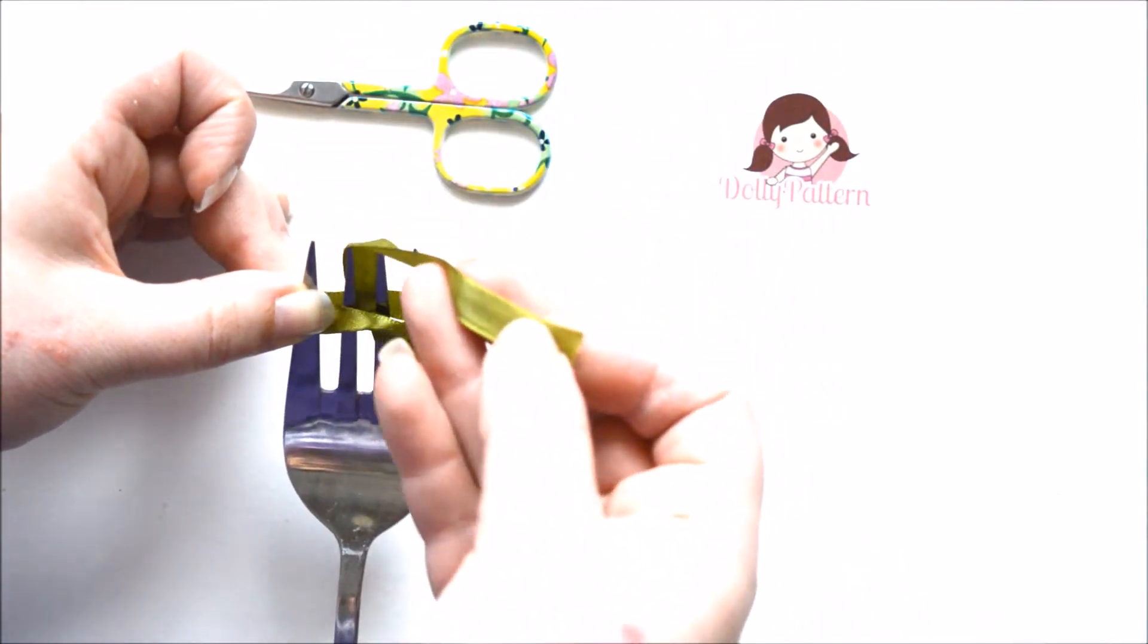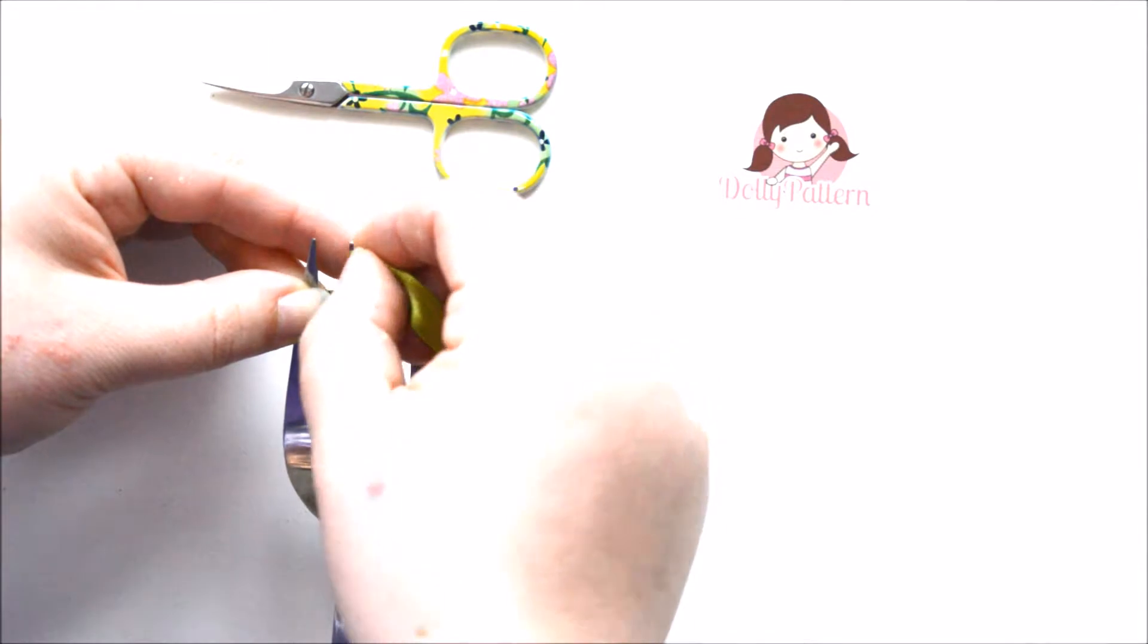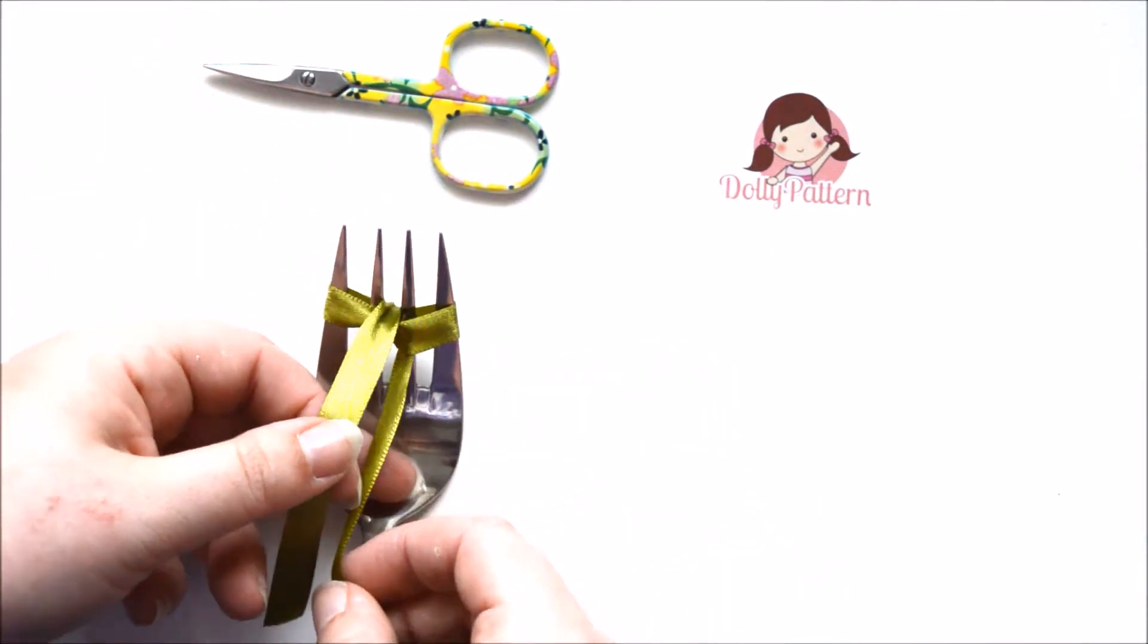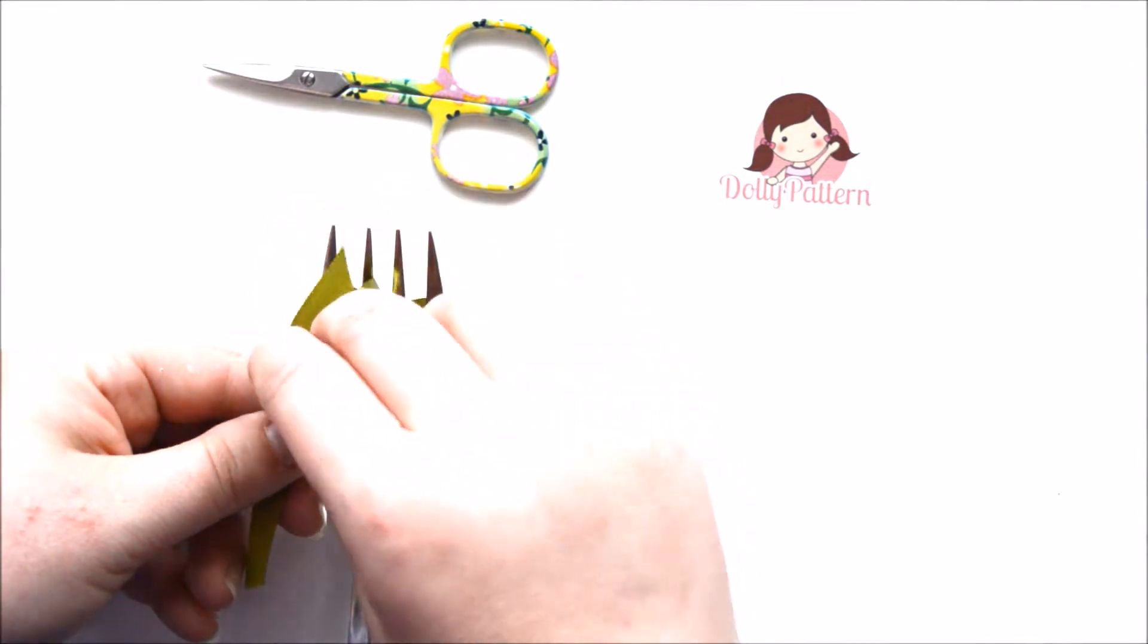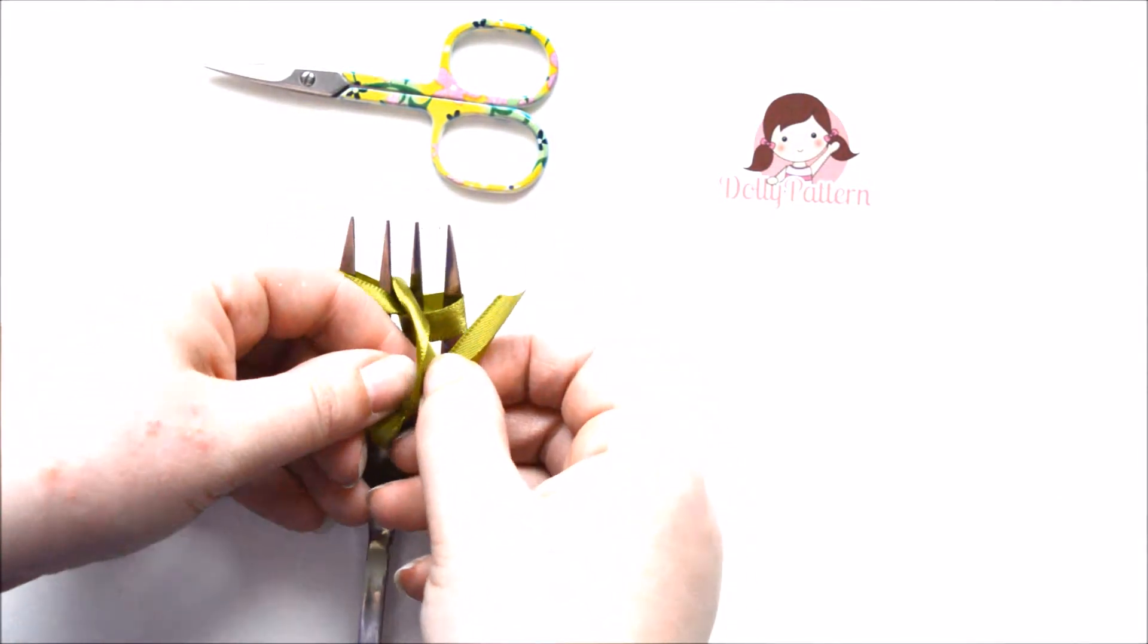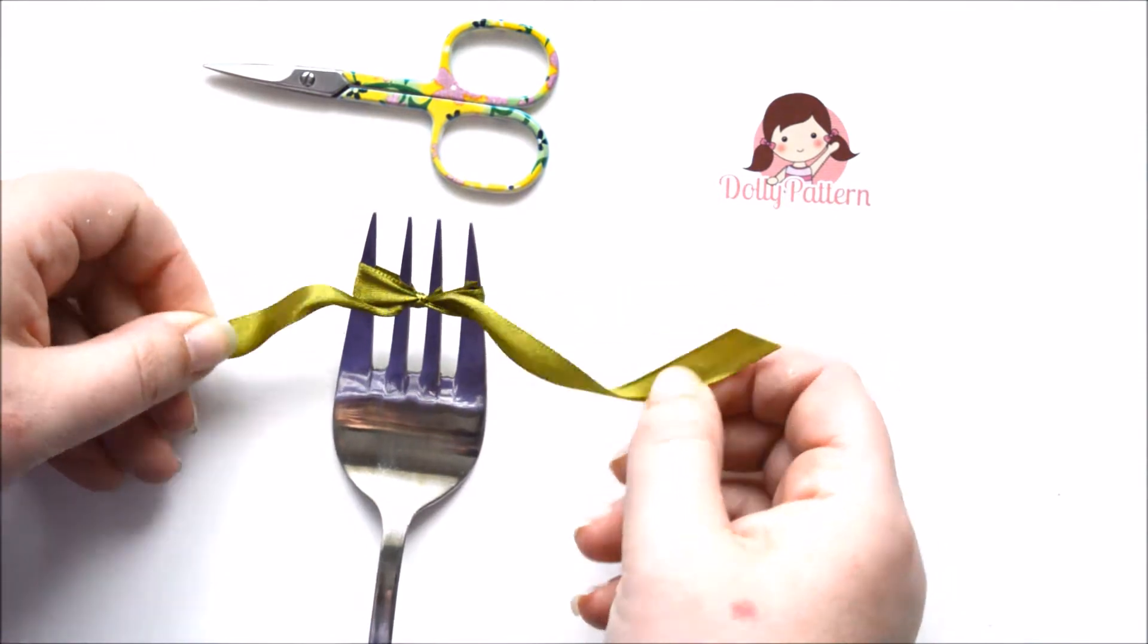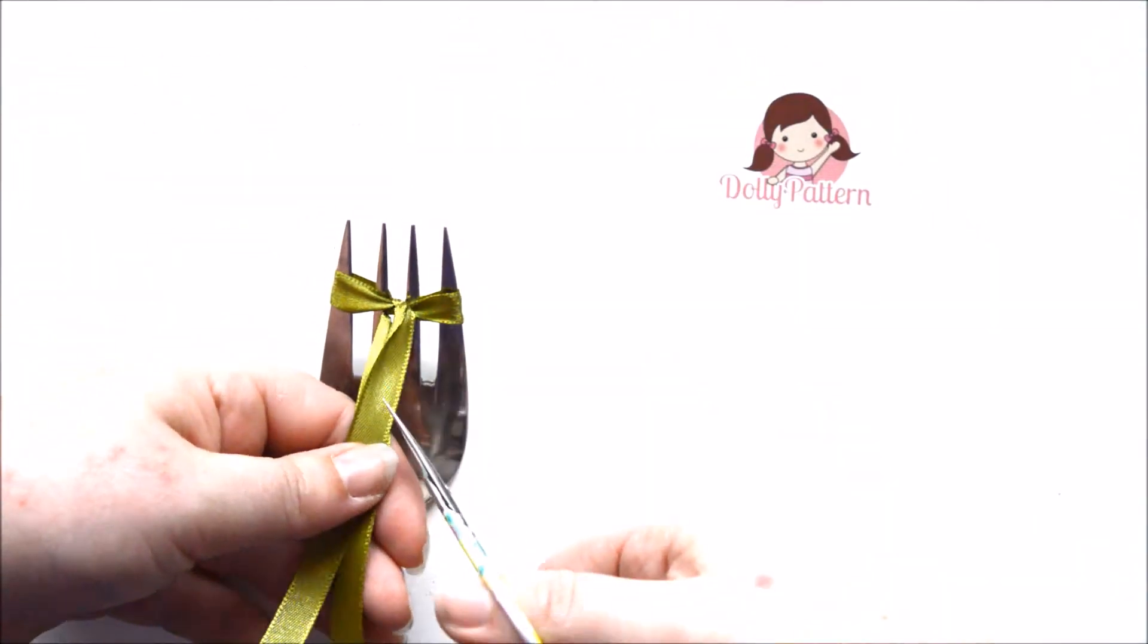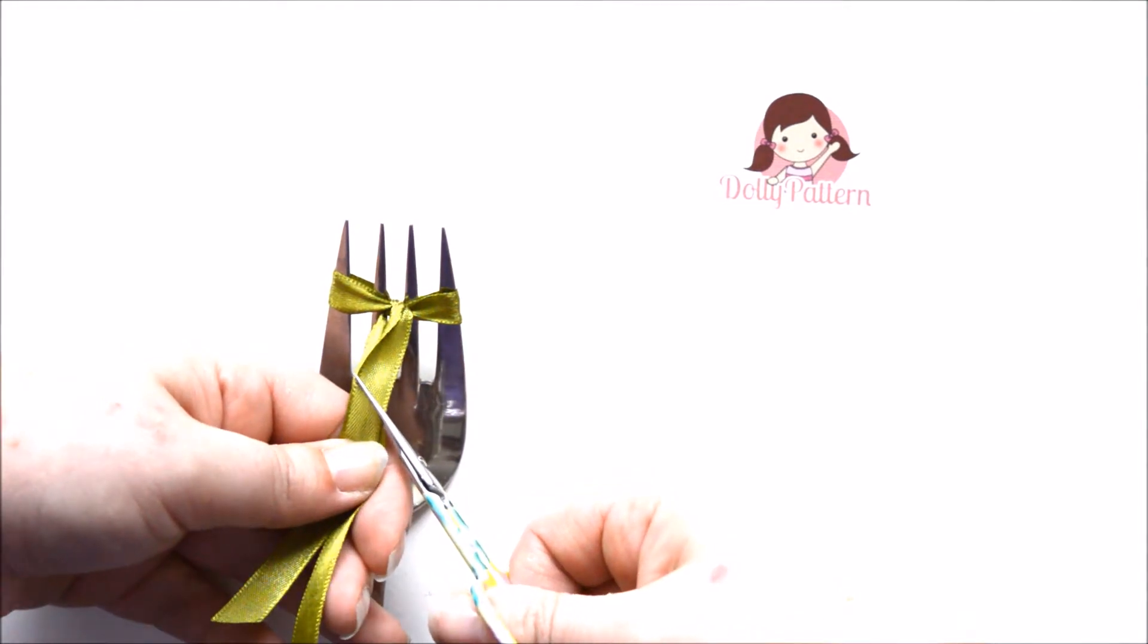Now you can start to see a bow, and so you go right over left, pull it tight. Let's have a little shorten up of those, very tidy.